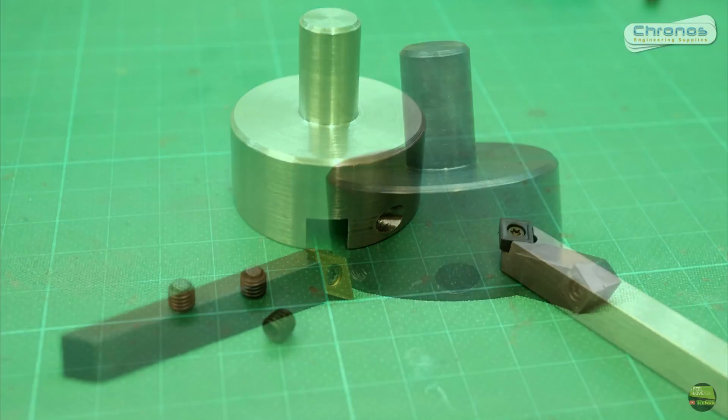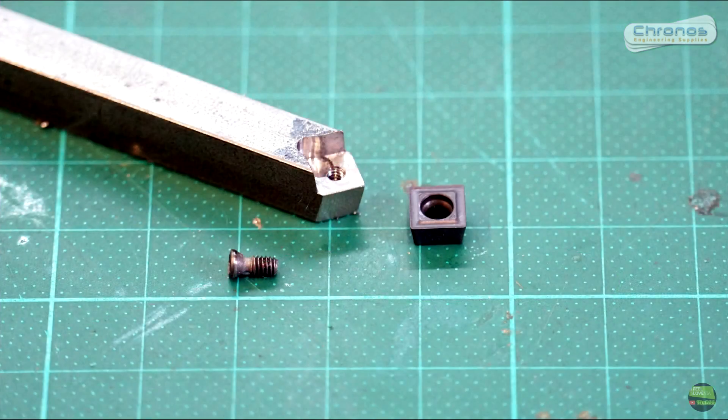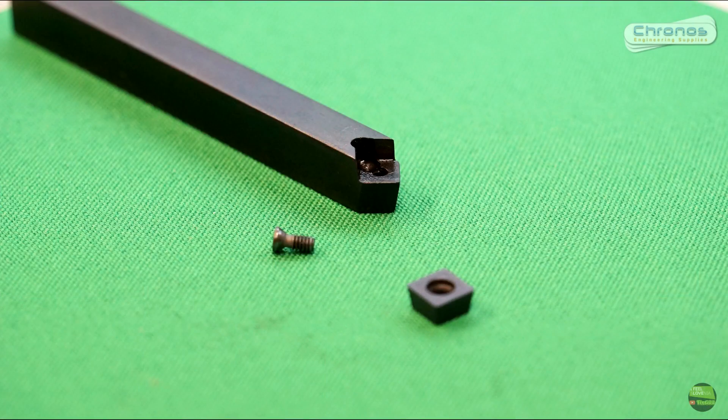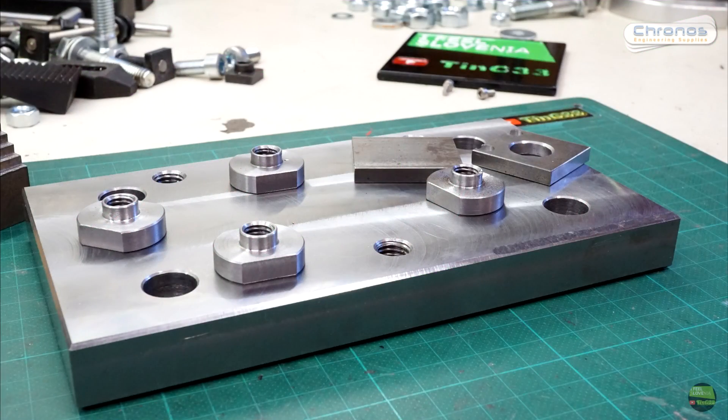When I make some tools I like to protect them with black. It's a really thin protection from dry rust. It's not protection for outside like paint or any electroplating process.